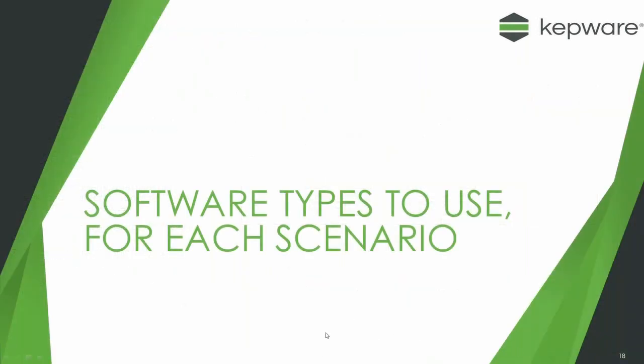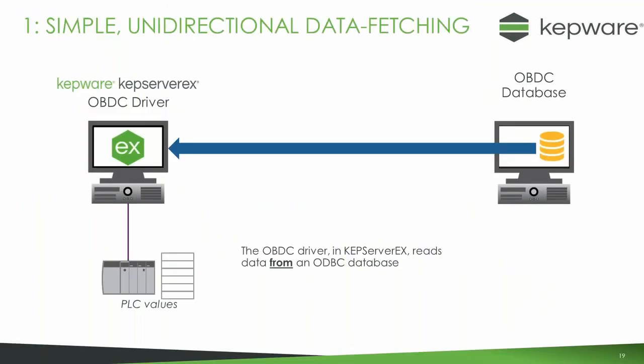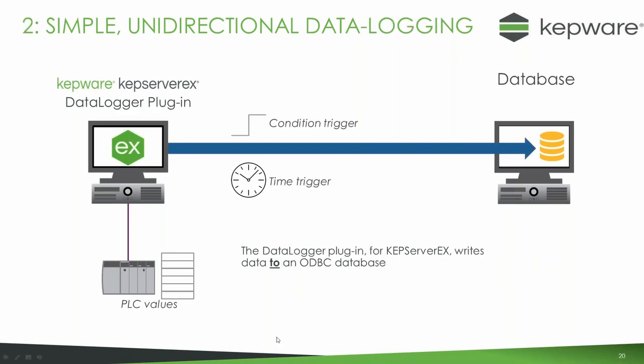So how do you solve these particular problems? For the unidirectional data fetching scenario, this is simply the ODBC driver inside KEPServer, used for reading data from an ODBC database — a one-way driver from the database down to the PLC. For the data logging scenario with time triggers or conditional triggers — data being sent from the PLC to a database — that's achieved using the KEPServer plugin called the Data Logger, which is actually the most common plugin we provide to KEPServer users.